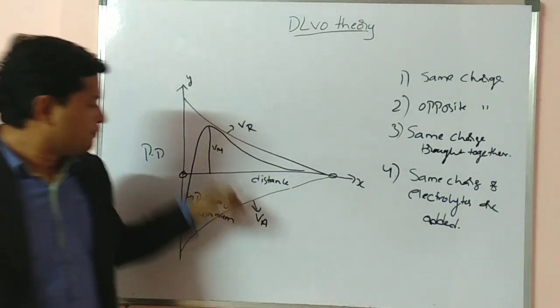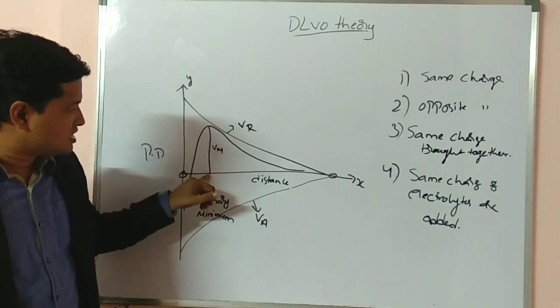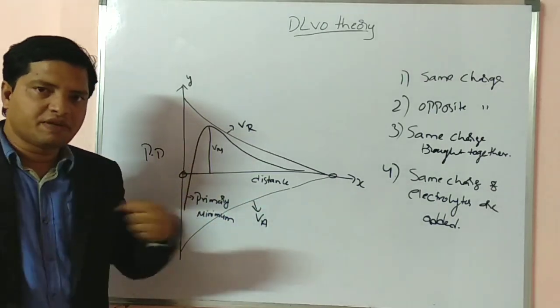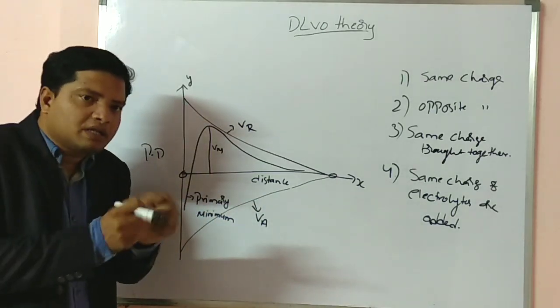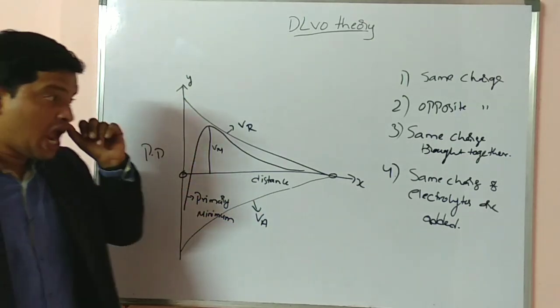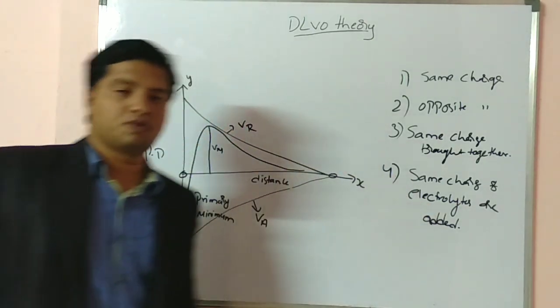This can be explained by the formation of hard cake in terms of flocculated suspension. In a flocculated suspension, hard cake formation represents your primary minimum. Primary minimum is the minimum distance where they start forming hard cake. At the potential maximum distance, they have maximum repulsion; if you go beyond this point, they start attracting each other.